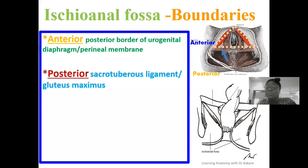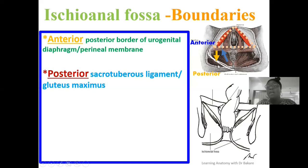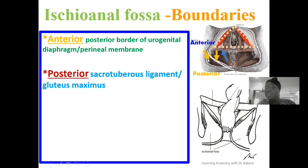The posterior border is formed by the sacrotuberous ligament and also the gluteus maximus. The sacrotuberous ligament runs from the tuberosity of the ischium to the sacrum, forming the posterior border. In addition, we also have the gluteus maximus. So there are two structures around the posterior region of the ischioanal fossa, and this presentation is the same on both sides.